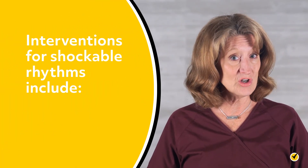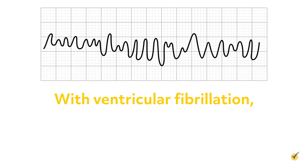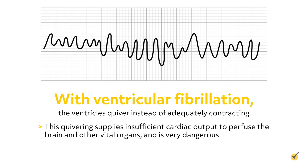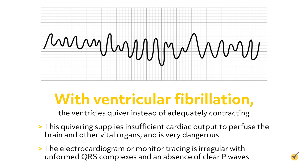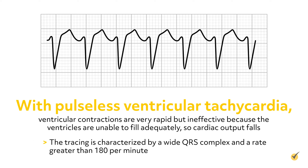Now let's look at interventions for shockable rhythms, which include ventricular fibrillation and pulseless ventricular tachycardia. With ventricular fibrillation, the ventricles quiver instead of adequately contracting, supplying insufficient cardiac output to perfuse the brain and other vital organs. The electrocardiogram tracing is irregular with unformed QRS complexes and an absence of clear P waves. With pulseless ventricular tachycardia, ventricular contractions are very rapid but ineffective because the ventricles are unable to fill adequately, so cardiac output falls. The tracing is characterized by a wide QRS complex and a rate greater than 180 per minute.